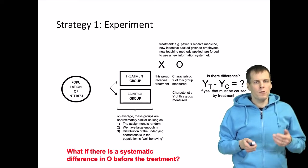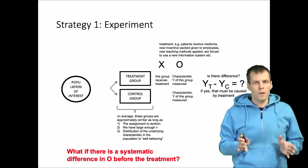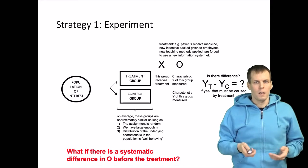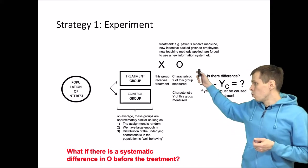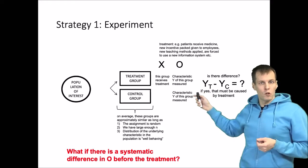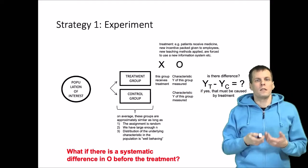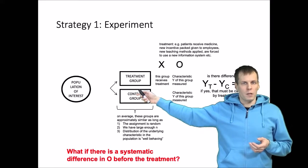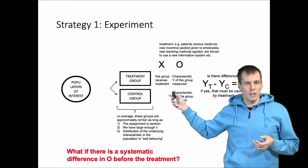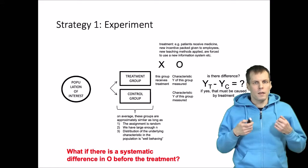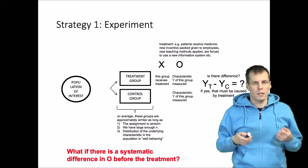If treatment and control are different on observed characteristics — for example, health — we cannot tell whether the difference post-treatment is due to the treatment or just a difference that existed pre-treatment and persists over the study. Difference in differences was designed to address exactly this scenario.